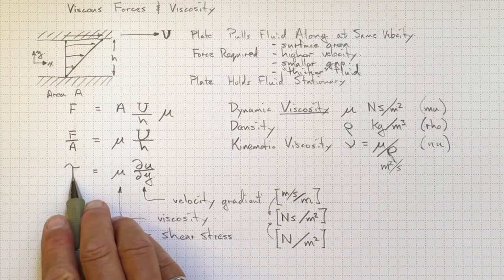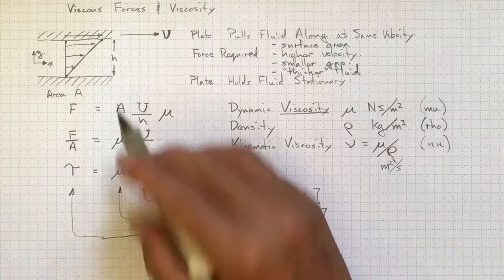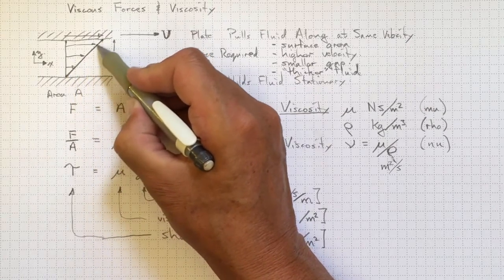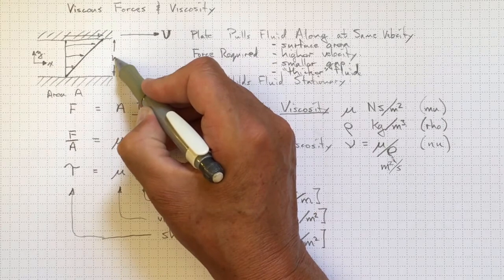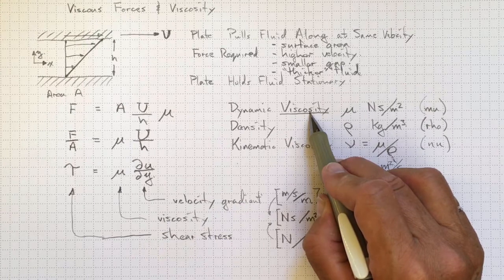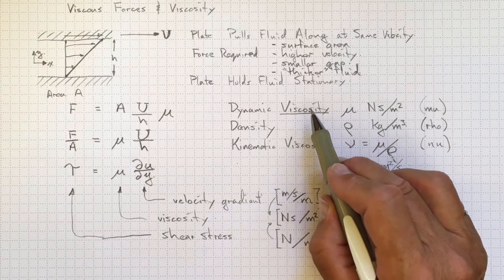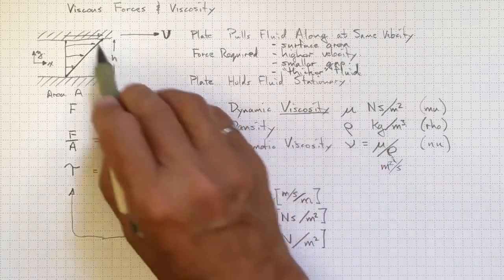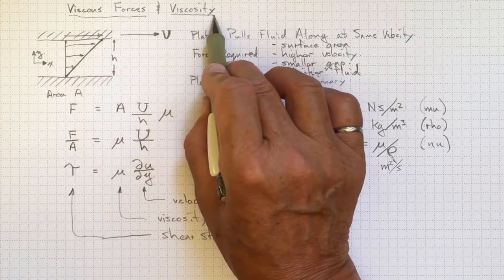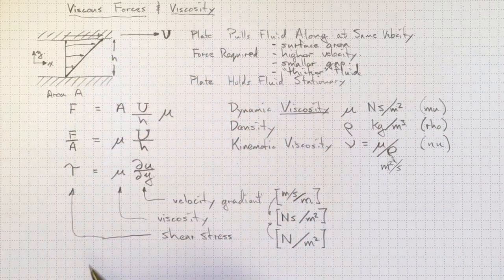Later on we'll see some more complicated arrangements for shear stresses and velocity gradients in three dimensions. But the fundamental idea applies. When you deform a fluid, the higher the velocity gradient, the more the velocity changes over a short distance, the higher the viscous stresses are going to be, and the more important they're going to be in the flow. So when we go to make that assessment about VPIGS, we're going to usually find that viscous forces are important either if the viscosity is large, or if the gradients are large, or both.